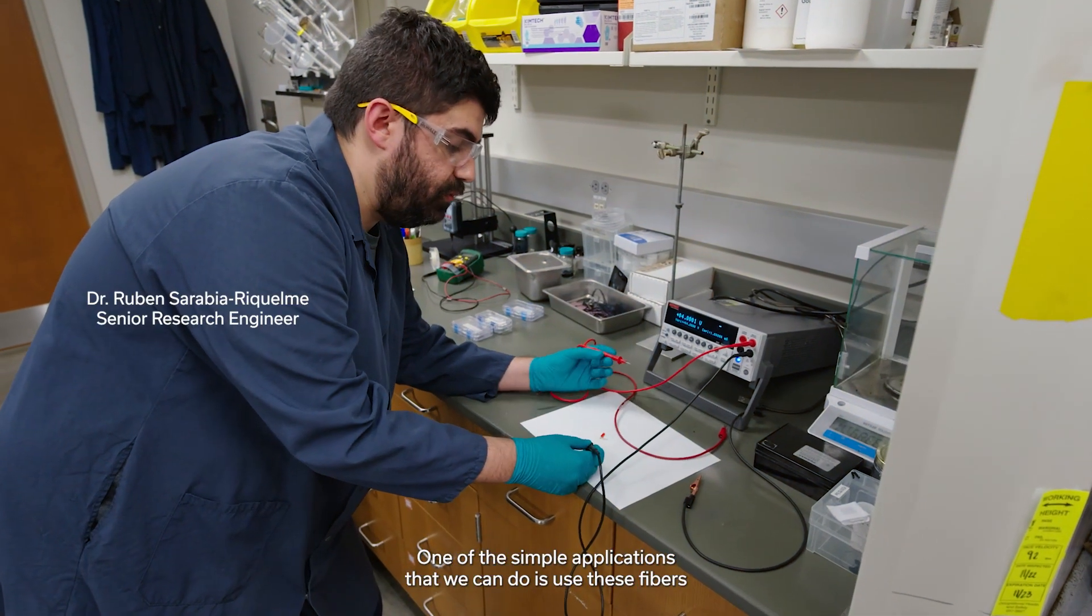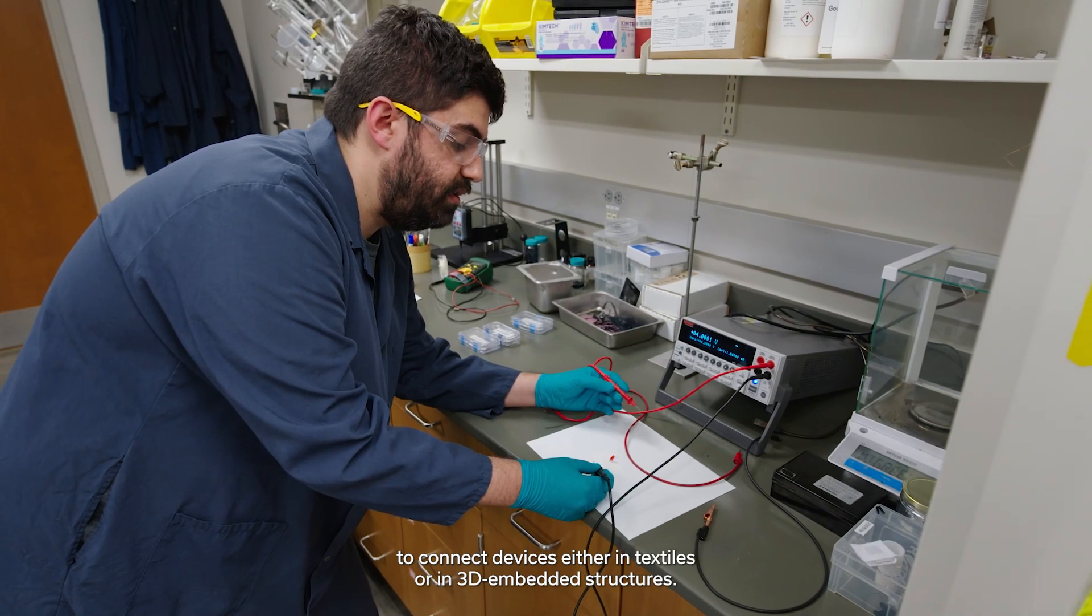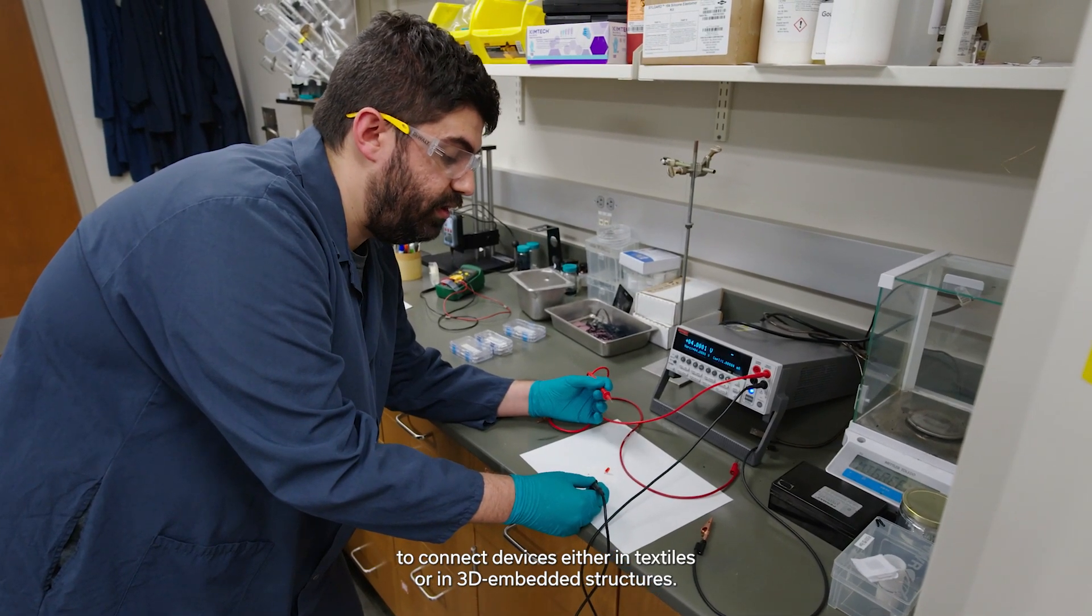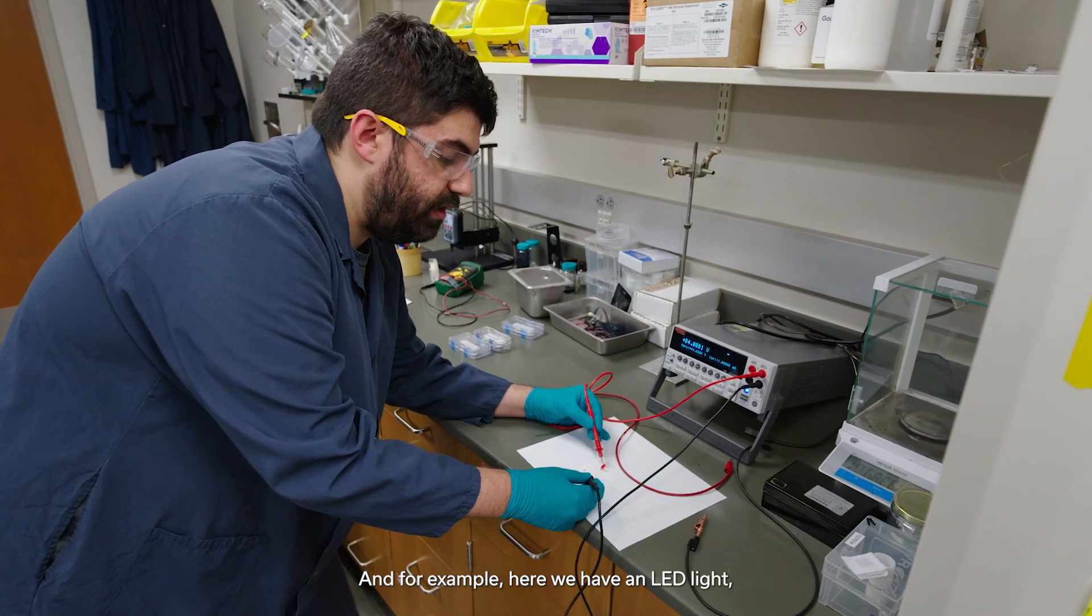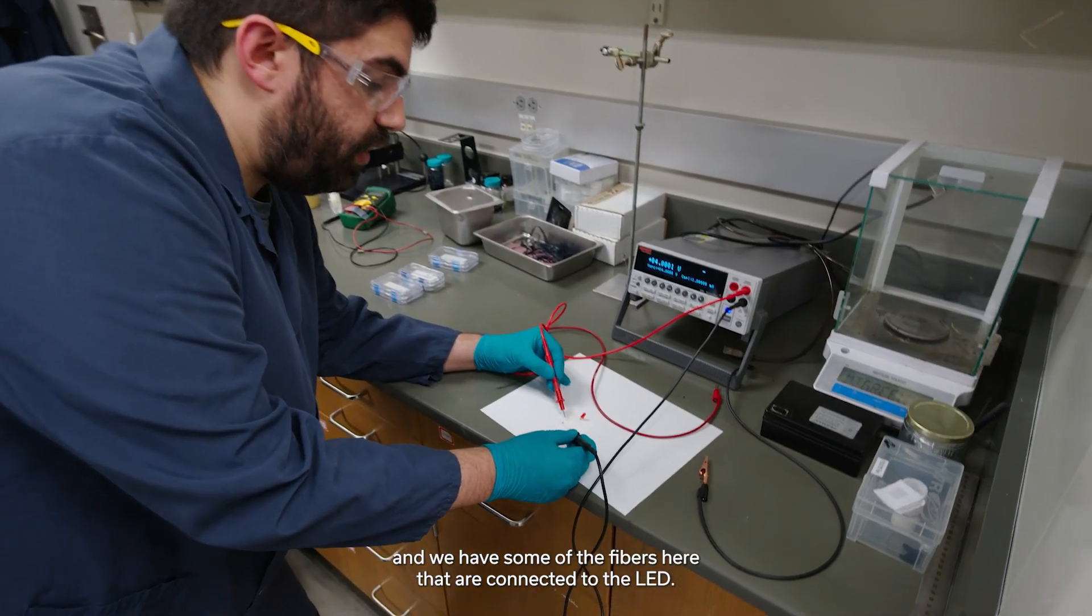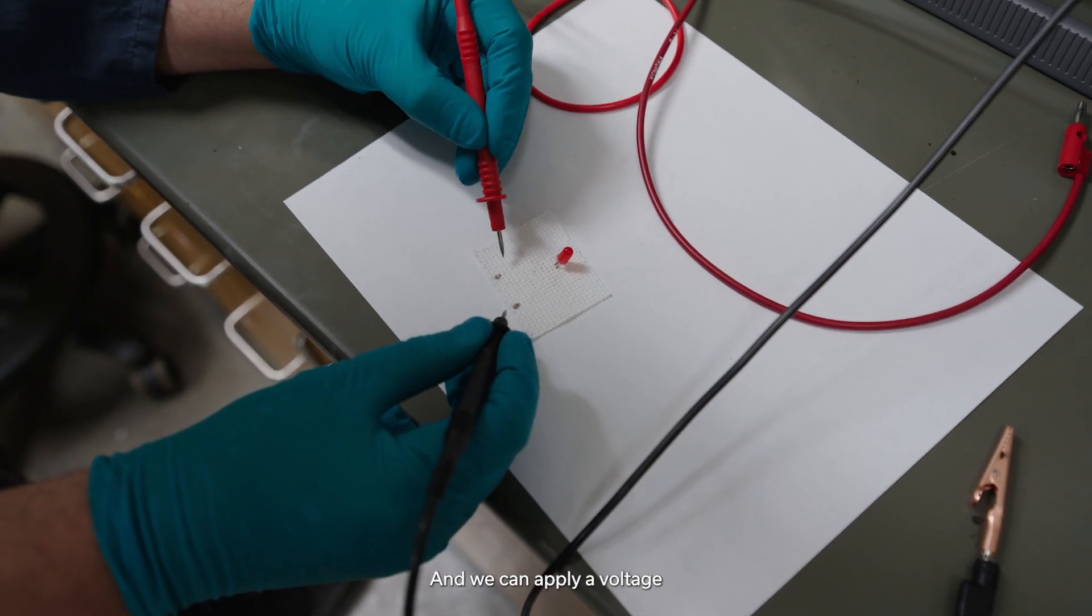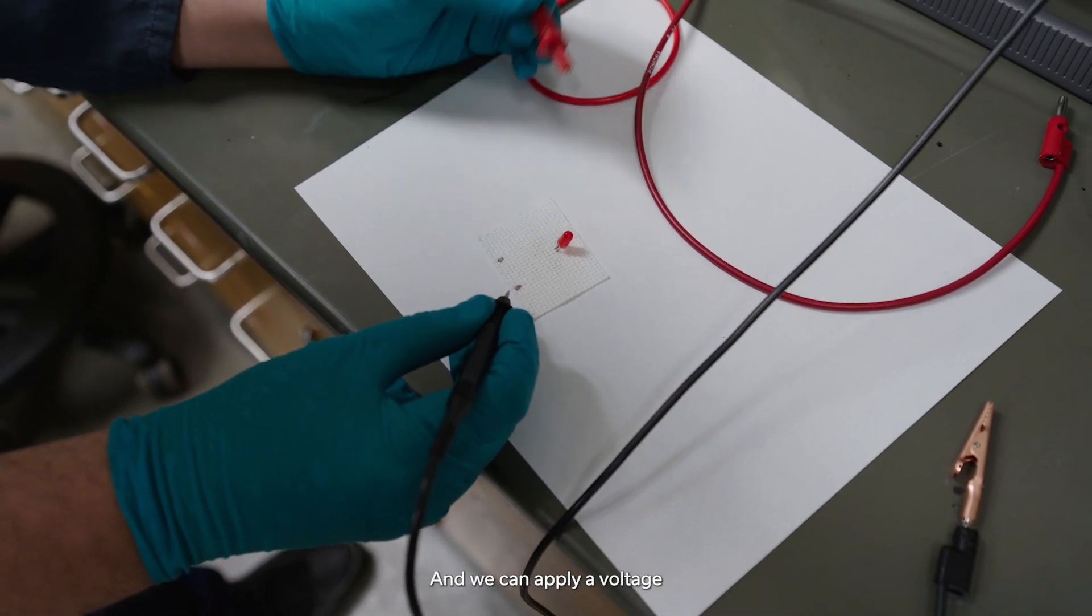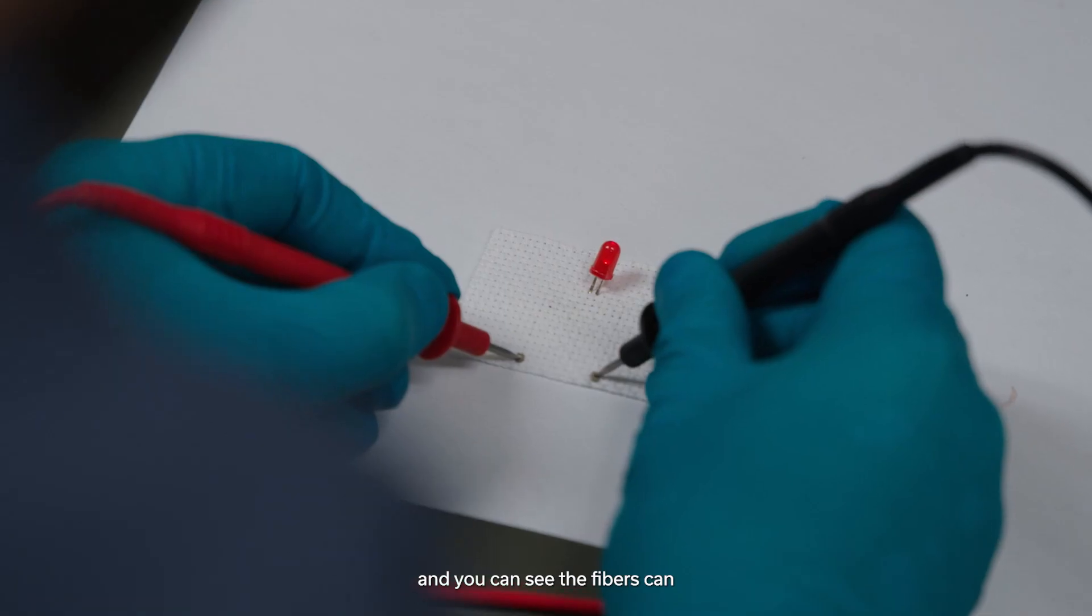One of the simple applications we can do is use these fibers to connect devices either in textiles or in 3D embedded structures. For example, here we have an LED light and some of the fibers that are connected to the LED. We can apply a voltage and you can see the fibers can transport the current and light up the LED.